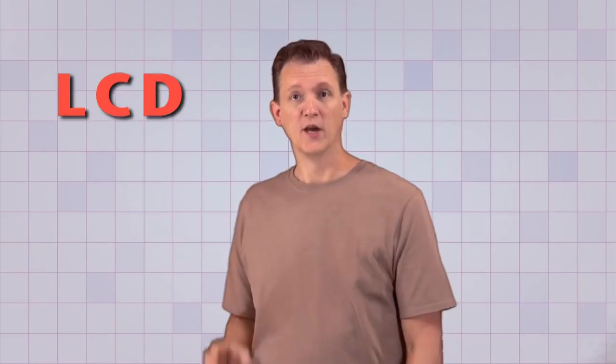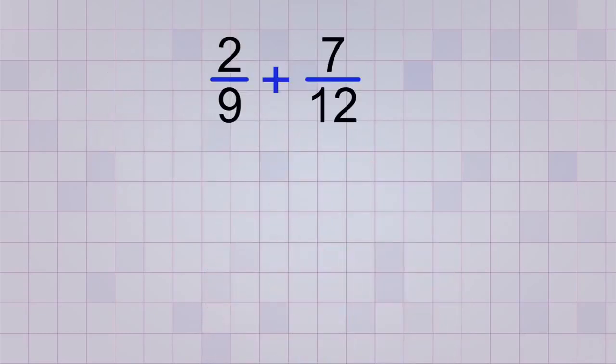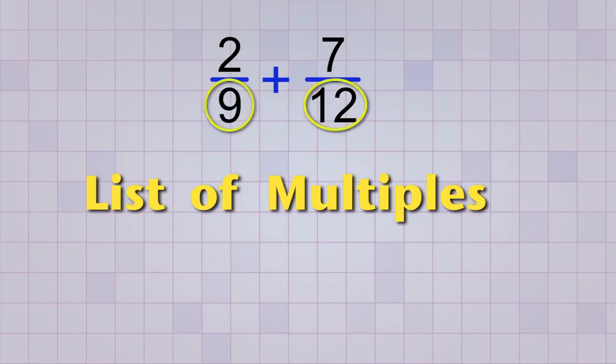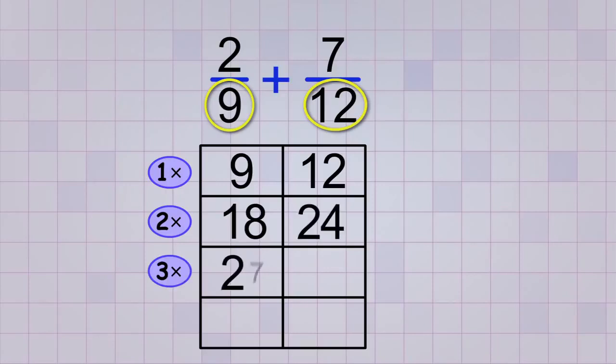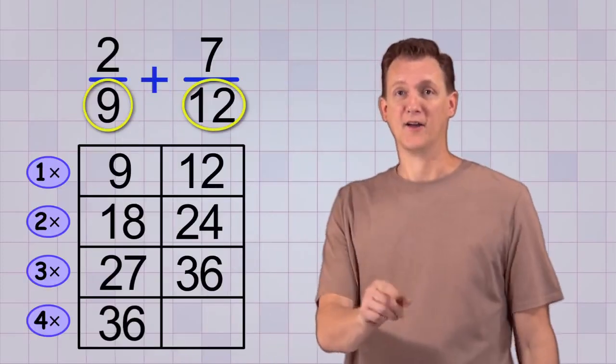Okay, ready for one more example? Let's find the LCD for these fractions: 2 over 9 and 7 over 12. Again, let's start by making a list of multiples for our two bottom numbers to look for a common multiple. 9 times 1 is 9, and 12 times 1 is 12, of course. 9 times 2 is 18, and 12 times 2 is 24. 9 times 3 is 27, and 12 times 3 is 36. 9 times 4 is 36. Aha! We found it!